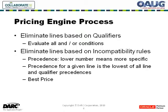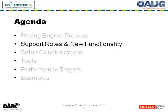The other option is what's called best price. Each modifier's effect is determined, and the one that gives the customer the best price is the one that will be chosen. So that's a quick flyby of what the engine does. The main takeaways are that list lines are selected first, and then qualifiers are applied.